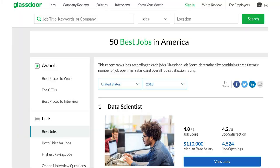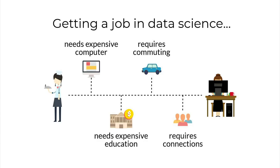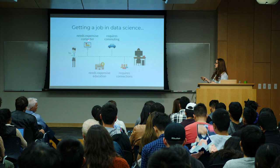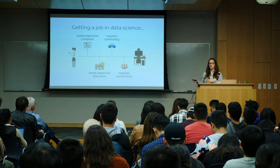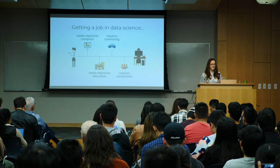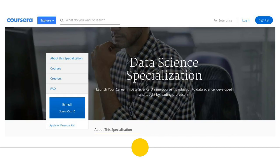Regardless of the definition, we know everybody's talking about data science. Being a data scientist is a good job — it was rated number one by Glassdoor last year because people are making a good wage and enjoying what they do. So we stepped back and asked: what does it require to get a job in data science? The barriers we detected were: it required an expensive computer historically, commuting to education or to the job, expensive education — a university education is not free — and lastly, it requires connections, which helps in every field.